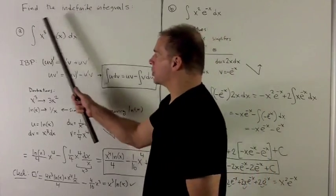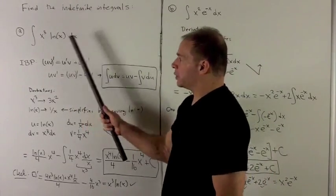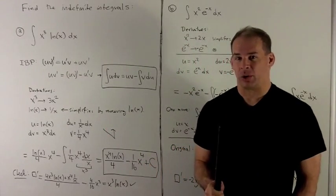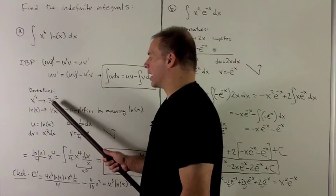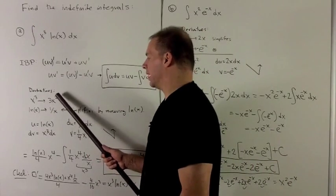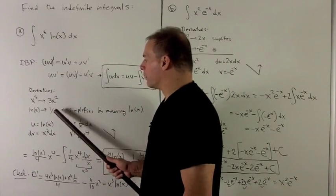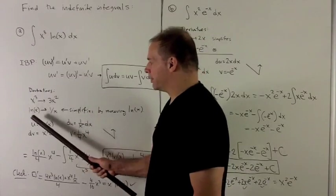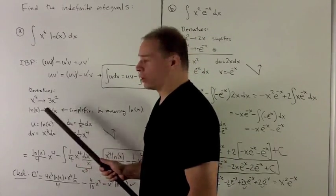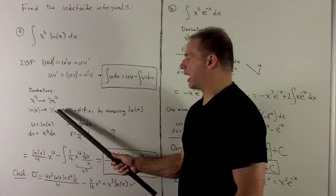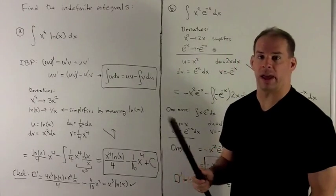For the integral we're actually interested in, I want to take the derivative of each piece and see which one simplifies the integral. For x cubed, that gives me 3x squared — that reduces the exponent. For natural log of x, we get 1 over x. This is the one we go with because it removes the natural log completely. And 1 over x is okay because we're multiplying by x to a power, which we can integrate.